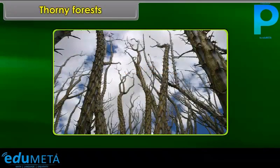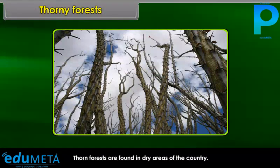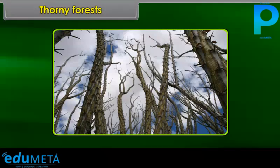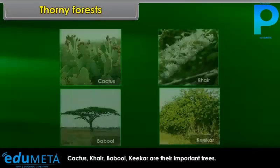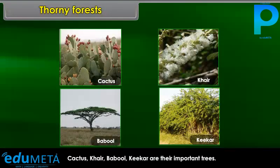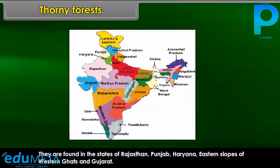Thorn forests are found in dry areas of the country. Their leaves are in the form of spines to reduce loss of water. Cactus, Khair, Babool, and Khejri are their important trees. They are found in the states of Rajasthan, Punjab, Haryana, eastern slopes of the Western Ghats, and Gujarat.